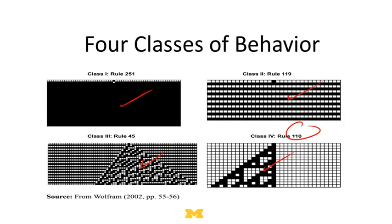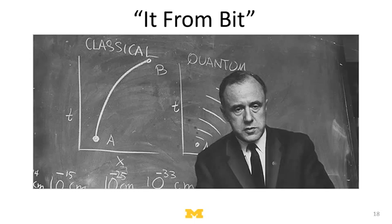We can then ask: why? Why do some rules go to steady state, some rules blink, some rules produce randomness, and some rules produce complexity? Before we get to that question of what creates complexity, chaos, or order, let's stop for a second and think about how profound these results are.